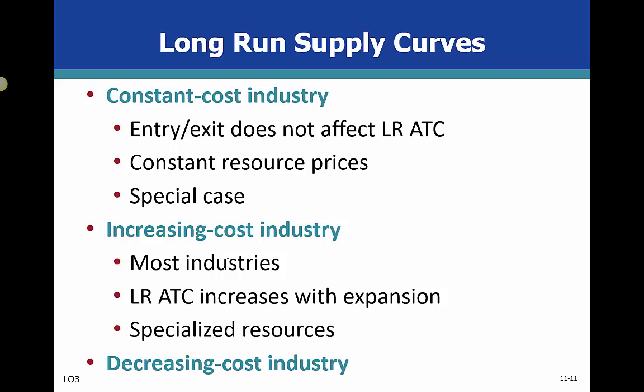We have three different types of industry. We talked about a constant-cost industry already, where entry or exit does not affect long-run average total cost. But in the case of an increasing-cost industry, it does. As we have more entrance, then average total cost will increase. Cost of labor, cost of inputs, whatever it is, it's going to go up because more people need it.